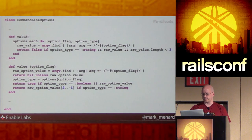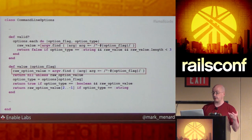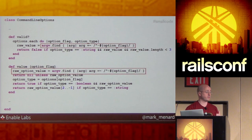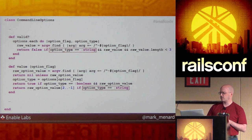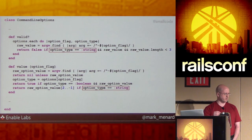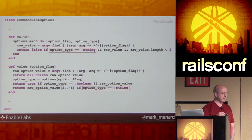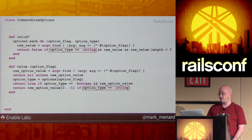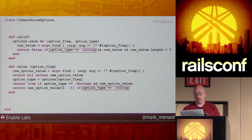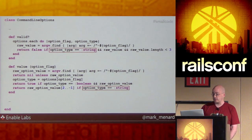Looking at our methods, we've got repetition — both valid and value are digging through the argv array to find the options from the command line. This is a perfect candidate for an extract method refactoring. We have magic constants scattered around, which are a strong indication we've missed an abstraction. It's hard to say either of these methods is really doing one thing — the code is definitely not at the same level of abstraction.